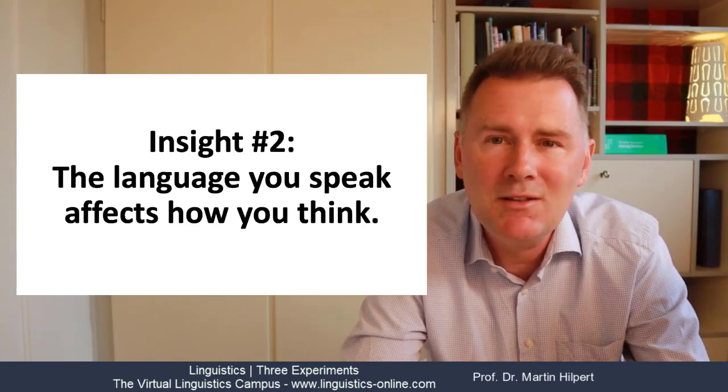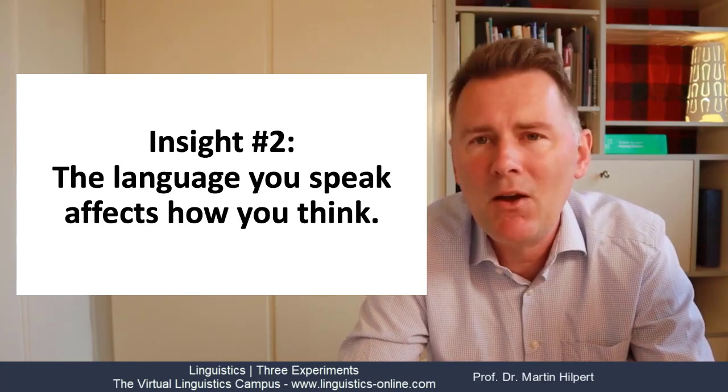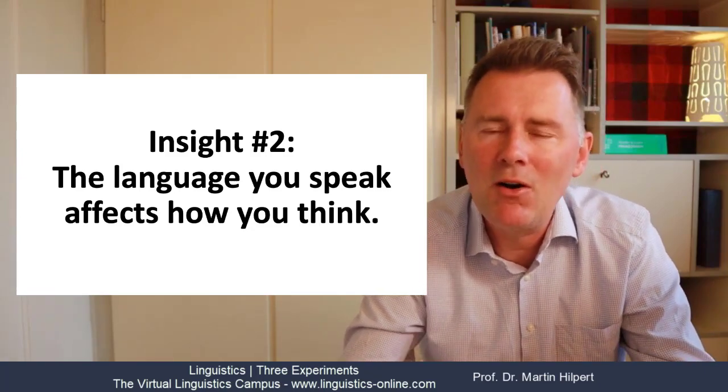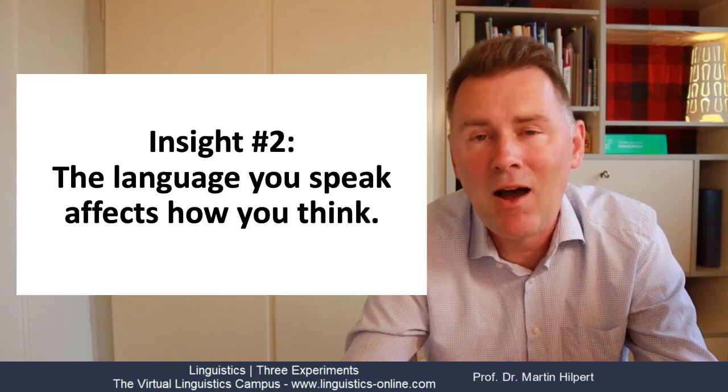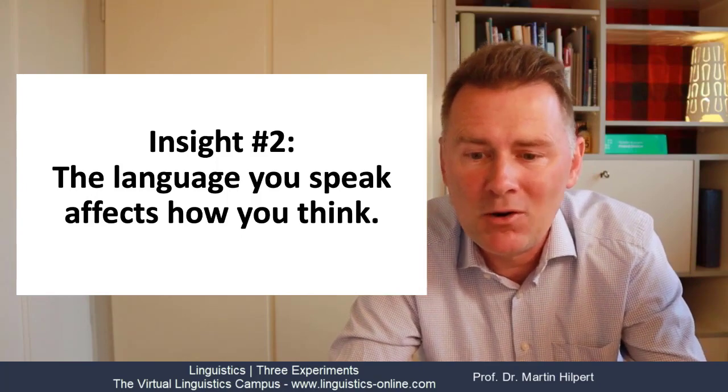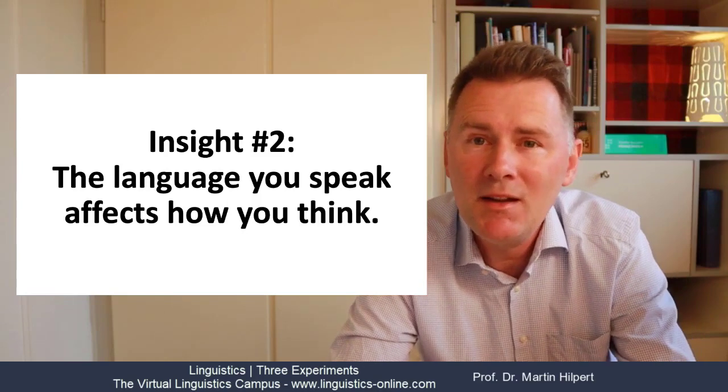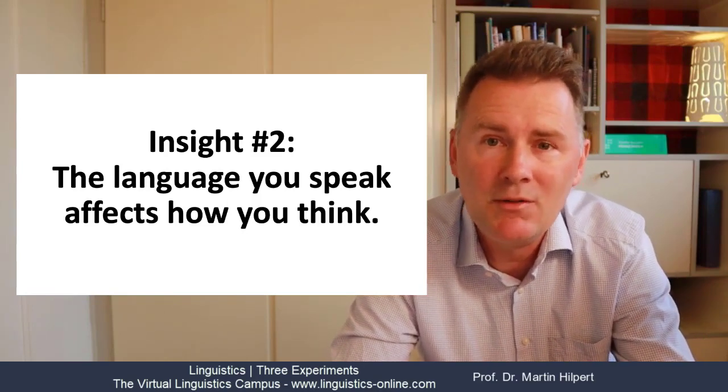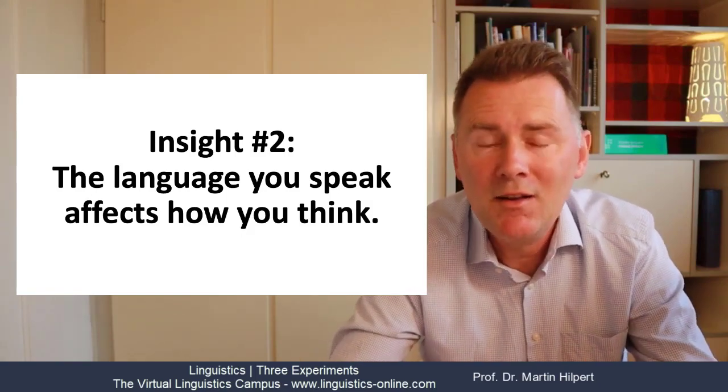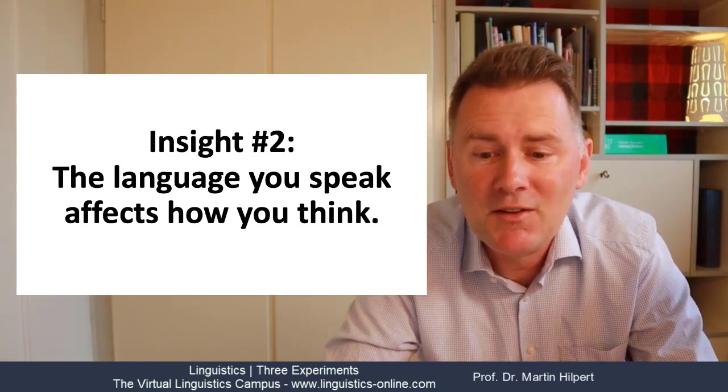The animals in a row experiment yields one very important insight namely that the language that you speak affects how you think and in this particular case the way your language lets you talk about space affects how you arrange toy animals when you're supposed to put them in a row just as before. For speakers of languages with absolute frames of reference that means that if the animals were facing south before you're going to put them facing south again. If your language lets you talk about left and right then if they were facing left before you're going to make them face left again.